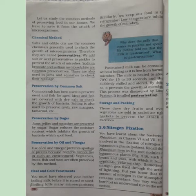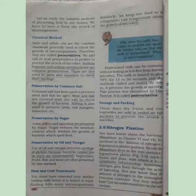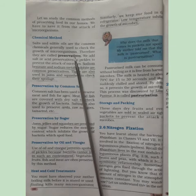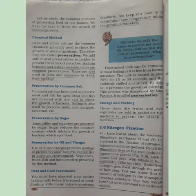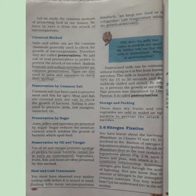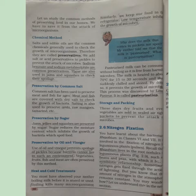Common methods of preserving food include the chemical method. Salts and edible oil are common chemicals used to check the growth of microorganisms and are known as preservatives. We add salt or acid preservatives to pickles to prevent the attack of microbes. Other chemicals such as sodium benzoate and sodium metabisulphite are used in jams and squashes to check spoilage.